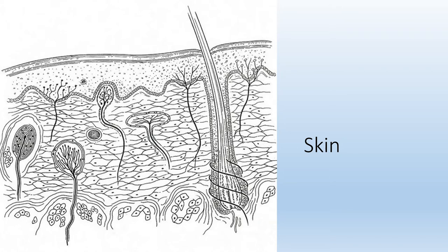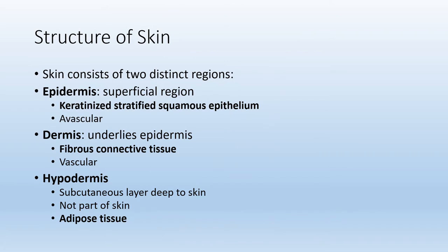The first thing we will talk about is the skin. You should note that the skin is the largest organ of the body and is the primary constituent of the integumentary system. If you remember from chapter 4, skin is a cutaneous membrane. A membrane includes at least two primary tissue types. A cutaneous membrane includes a layer of epithelium, also referred to as the epidermis, and a layer of connective tissue proper, which we will refer to as the dermis.